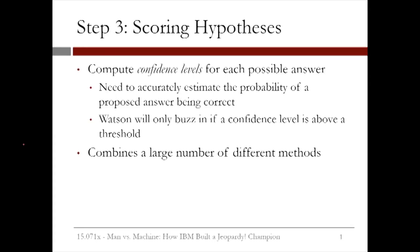After Watson has completed the initial two steps of question analysis and hypothesis generation, it's then time to move on to step three, where each of the hypotheses are scored. In this step, Watson computes confidence levels for each possible answer or hypothesis. This is necessary to accurately estimate the probability of a proposed answer being correct.